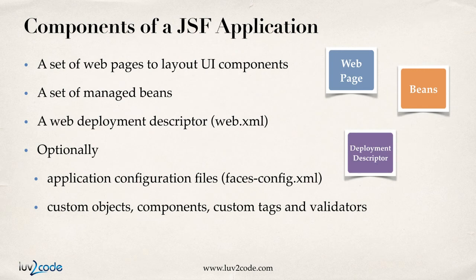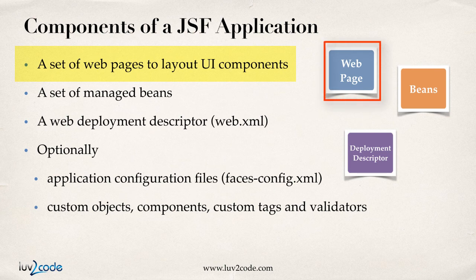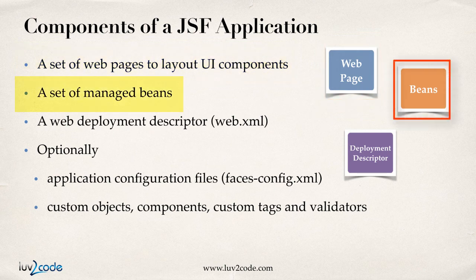So what makes up a JSF application — what's required to build one? Well, a JSF application is basically a set of web pages to lay out components. We'll make use of special JSF technology called Facelets. Also, a JSF application is composed of a set of managed beans. This is Java code in the background for holding your form data and also performing your back-end operations like talking to a database.